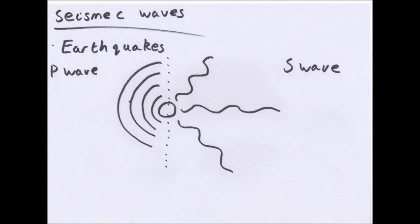Seismic waves are caused by earthquakes. Movements inside the Earth, such as earthquakes, cause waves to be transmitted. There are two types: P waves and S waves. S waves are transverse — they move rocks from side to side. P waves push and pull on the rocks and are longitudinal waves, like sound waves. The epicentre is the point on the surface of the Earth directly above the focus — the centre of the earthquake — and is where the strongest reaction from these waves will occur.